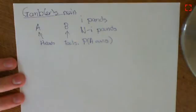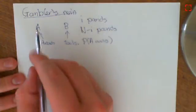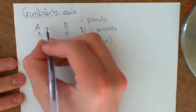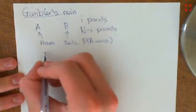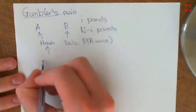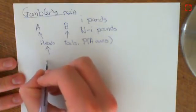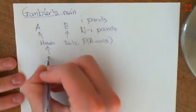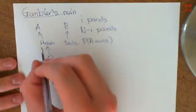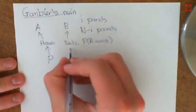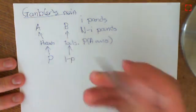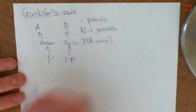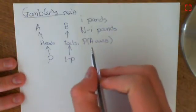That is our setup. It's a really quite difficult problem. We also need to know the probability that the coin lands on heads or tails. So let's say the probability that the coin lands on heads is P, and the probability that it lands on tails is one minus P. So, given this, what is the probability that A wins? That is the setup for gambler's ruin.